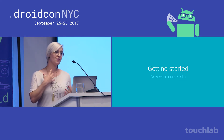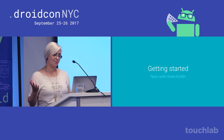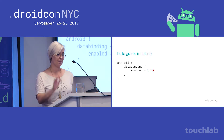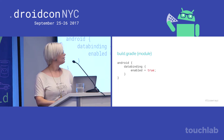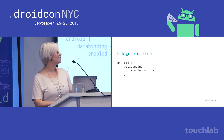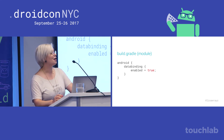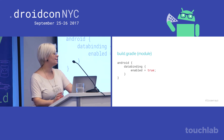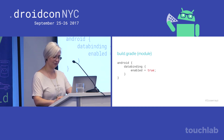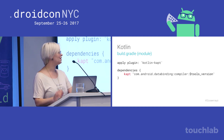Here's how you get set up — it's pretty simple. You go to your module build.gradle file and put dataBinding enabled equal true. But if you're using Kotlin, you may already be familiar with this: if you're using APT, you now need to be using the Kotlin KAPT plugin.